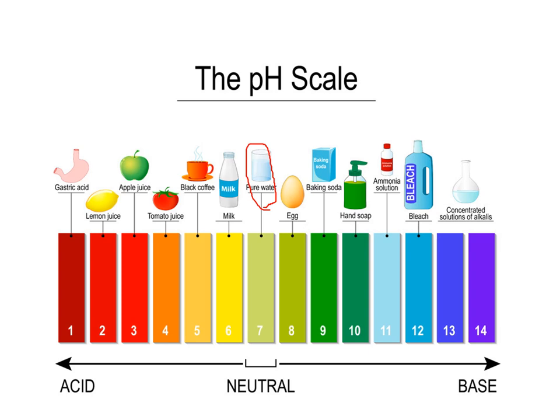Stomach acid, which is gastric acid, is about pH 1 or 2 — very acidic. Some of you might have had heartburn, or know someone who has and had to take tablets. What pH do you think those tablets are? Pause the video and think about it.